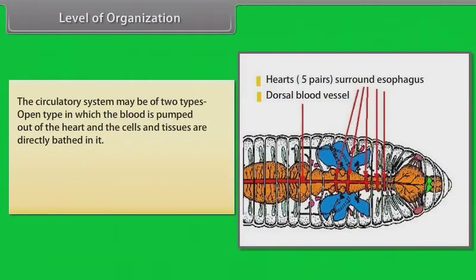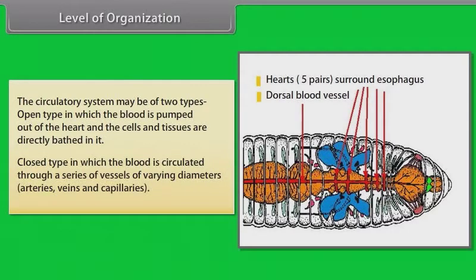The circulatory system may be of two types. Open type, in which the blood is pumped out of the heart and the cells and tissues are directly bathed in it. Closed type, in which the blood is circulated through a series of vessels of varying diameters — that is, arteries, veins and capillaries.